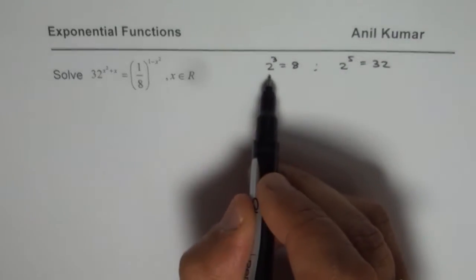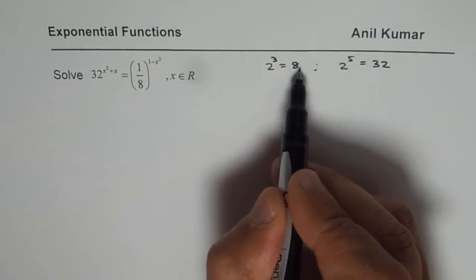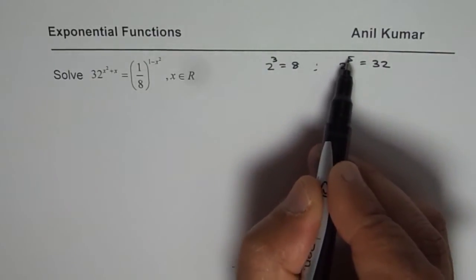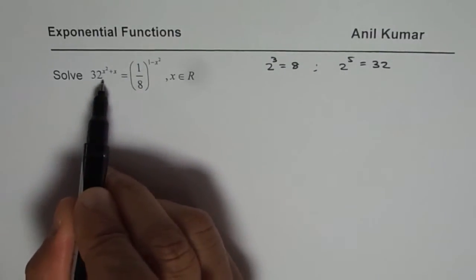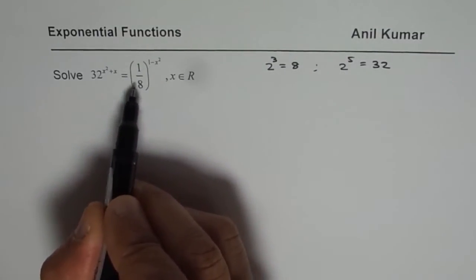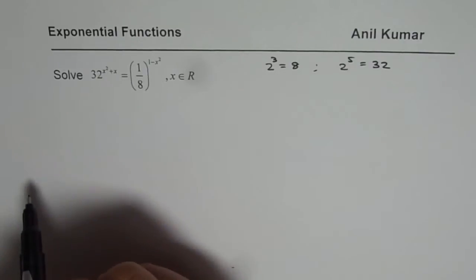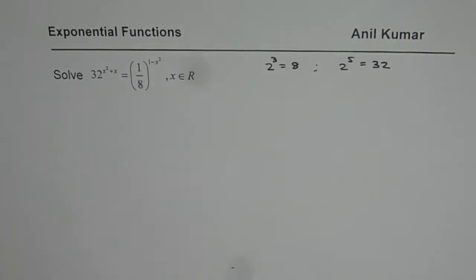So 2 times 2 times 2 is 8, 8 times 2 is 16 then times 2 is 32. So 2 to the power of 5 is 32. We could actually write them with the base of 2 and then equate the exponents to find the solution. That is the strategy for solving such questions.